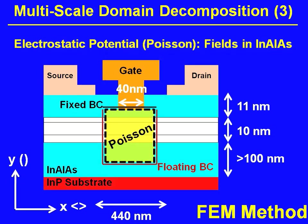Once we know where the atoms are and how they are strained, we can do an electrostatic calculation — a Poisson domain with floating boundary conditions — where we take a subsection of this device. That subsection is now small enough that we can do the electrostatics.